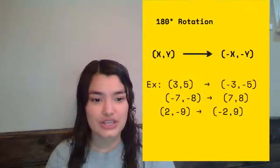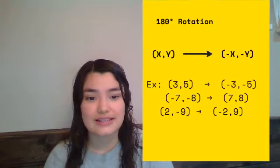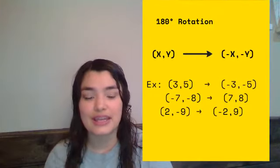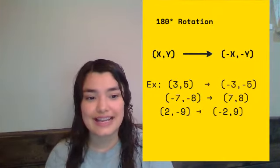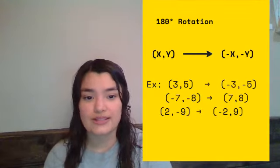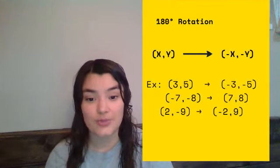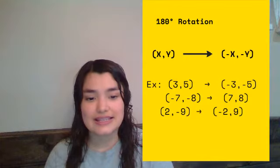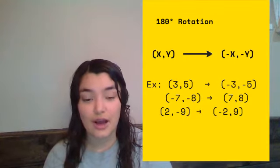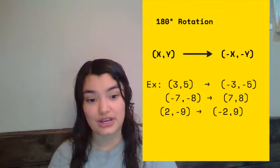In 180 rotation, there is simply one formula. It is easy enough, it is only telling you that it's exactly the opposite. So both your x and your y coordinates are going to be the opposite. So in these examples, (3,5), the opposite of those is (-3,-5).